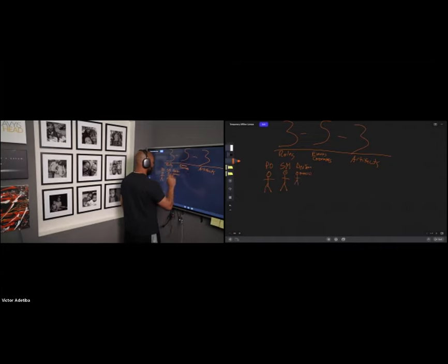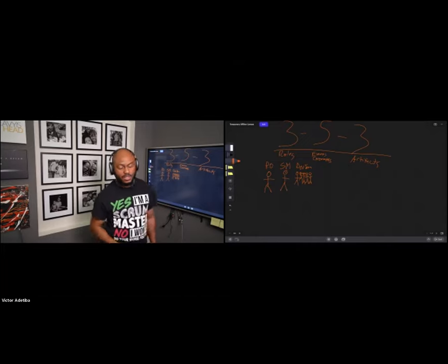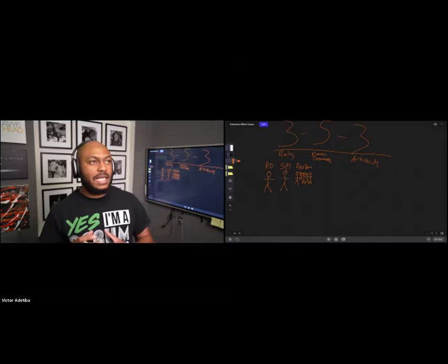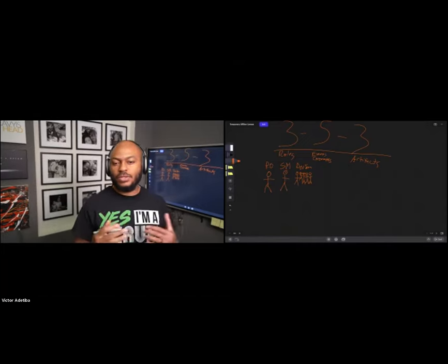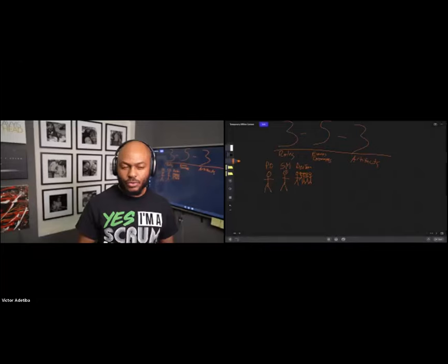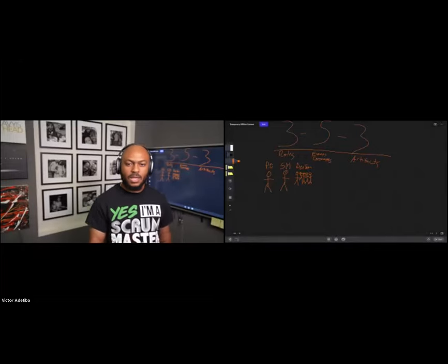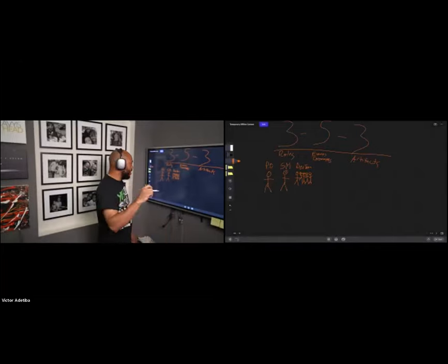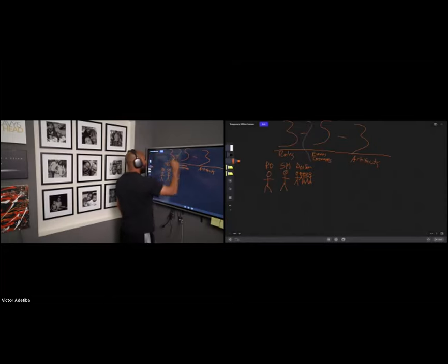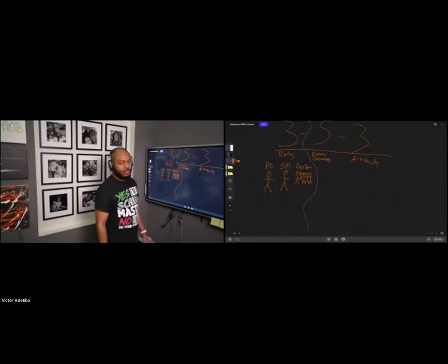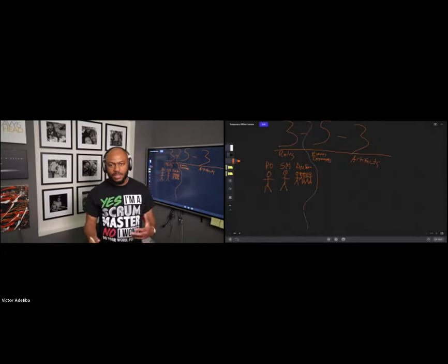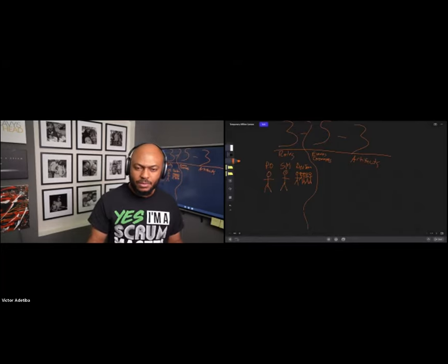These are the smart guys — the coders, the testers, the QA team. Normally, a Scrum team should be six members plus or minus three. So on the high end, you want a total team of about nine, and on the low end, about three people on a Scrum team.